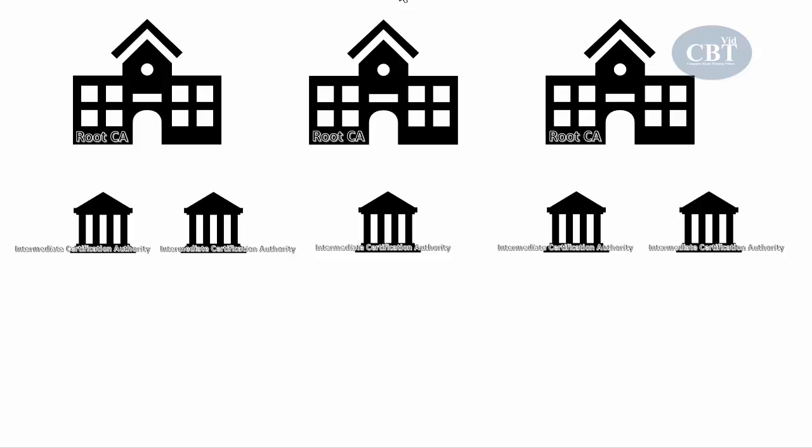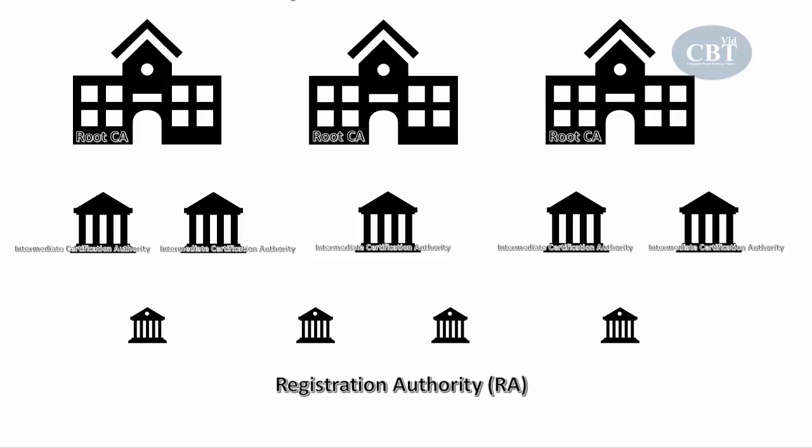Intermediate certification authorities process certificate requests and verify the identity of individuals requesting certificates. To take the load off intermediate CAs and save costs, we have other organizations called registration authorities. Registration authorities are also subordinate entities designed to handle some of the intermediate CA's tasks. They can identify and authenticate requesters, obtain their public key, and ensure they own the private key associated with that public key. Once verified, they pass the information to the intermediate CA to issue the certificate.